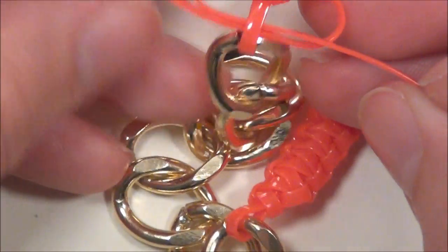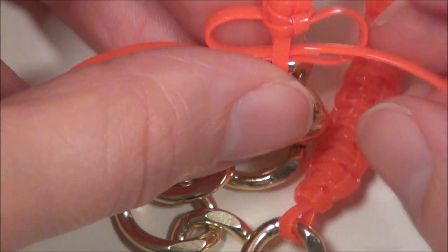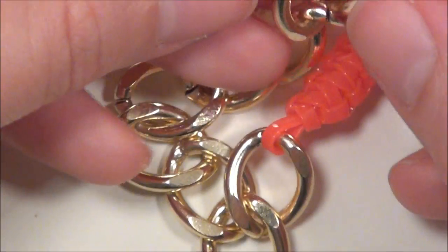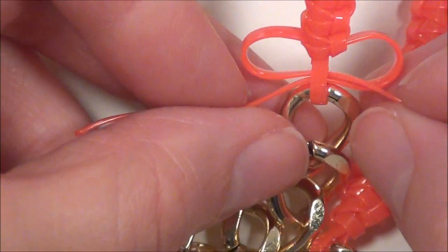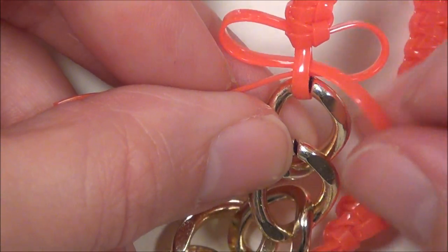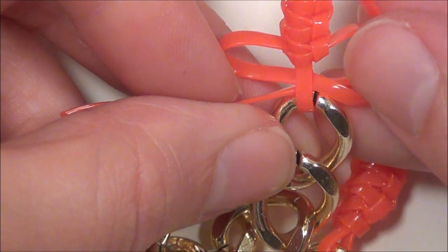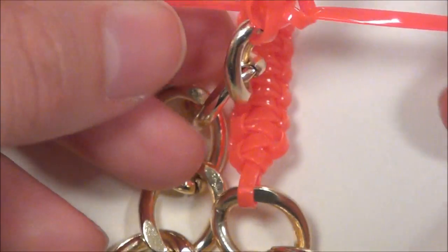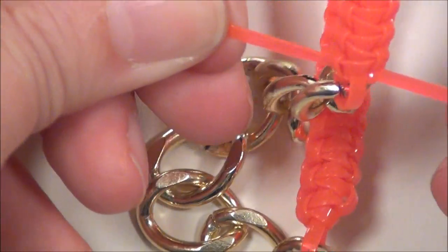Now once they're through, I'm basically tying a square knot. So you can see how they're crossed over like that. This one's on the inside, I'm going to take it down and back up through that loop. So that's the first half of my square knot.